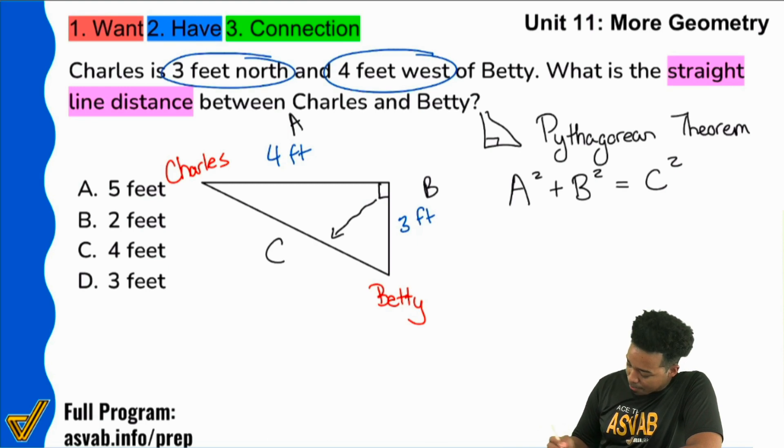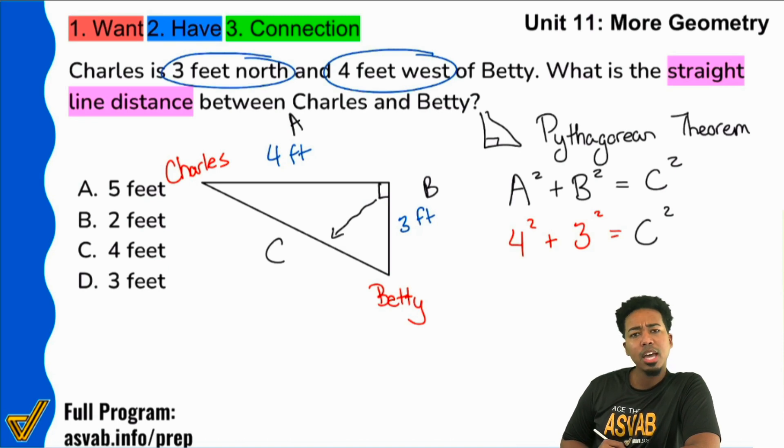So here we have it. We have A squared plus B squared equals C squared. So we can say four squared plus three squared equals whatever C squared is. Now four squared, that's four times four and that's 16. Three squared, that's three times three and that's nine. Add those together and you get 25.